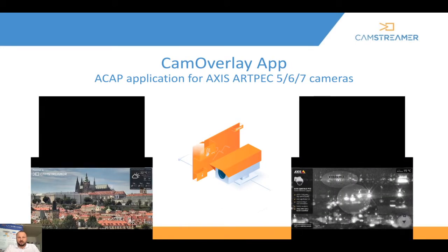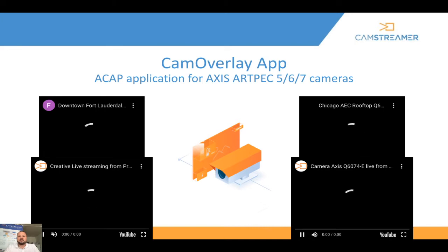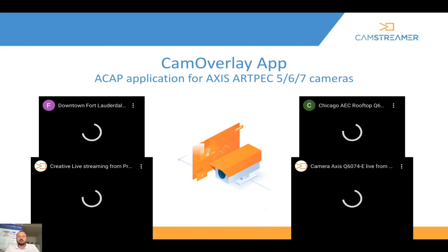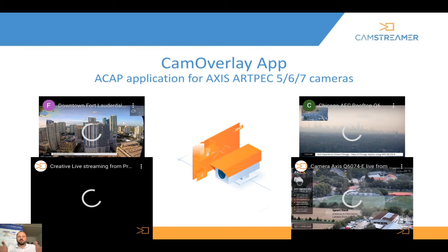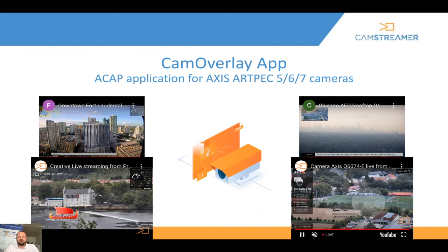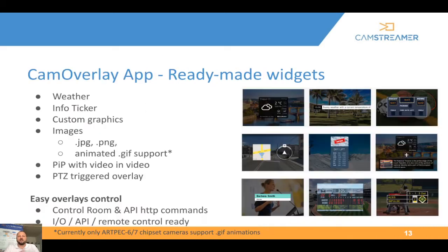Cam Overlay is an ACAP app available for Axis ARTPAC 5, 6, and 7 cameras. It enables you to add visuals to your video such as weather forecast, uploaded pictures, animations, picture-in-picture, PTZ overlays, and more.